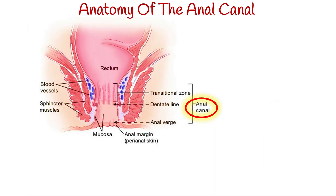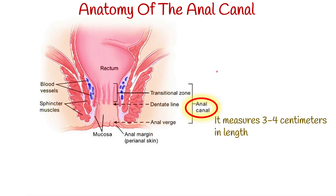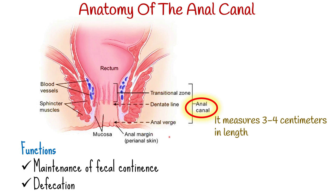The anal canal is the final section of the digestive tract. It measures 3–4 cm in length. It begins at the anorectal junction distally from the perineal flexure and ends at the anus. The functions of the anal canal are maintenance of fecal continence and defecation.